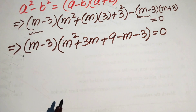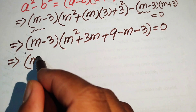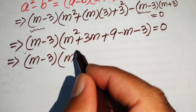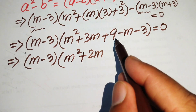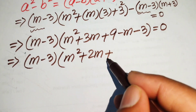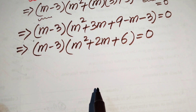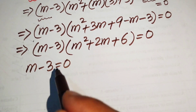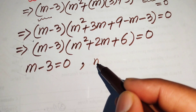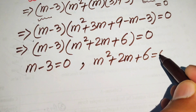After some simplification we write it as m minus 3 times of m squared plus 2m plus 6 equals 0, since 3m minus m equals 2m and 9 minus 3 equals 6. We now divide this into two cases: the first case is m minus 3 equals 0, and the second case is m squared plus 2m plus 6 equals 0.